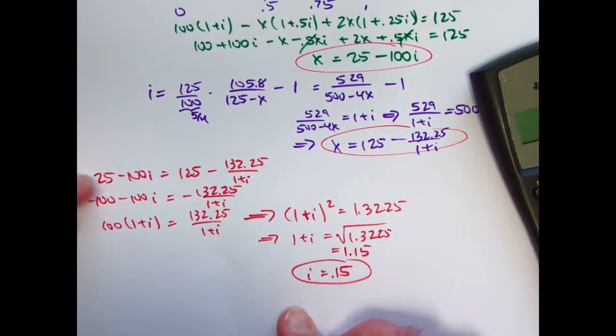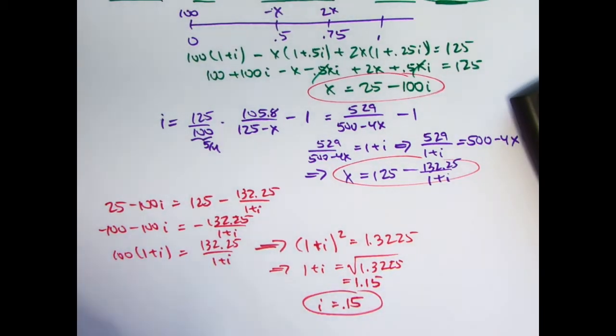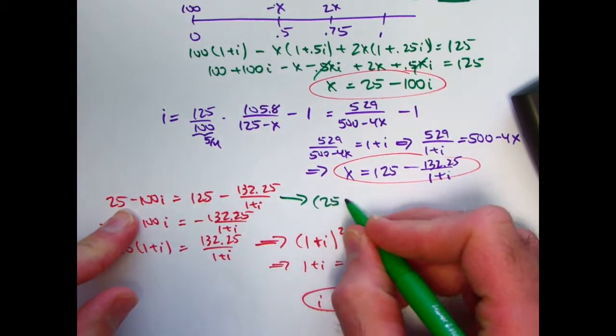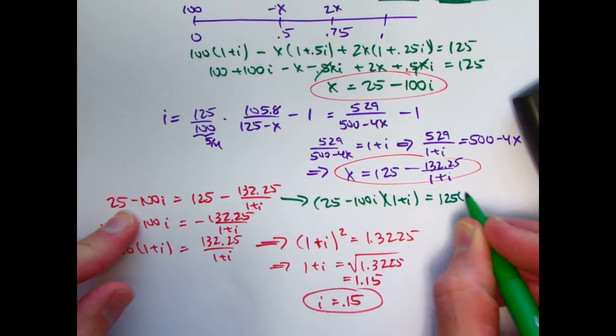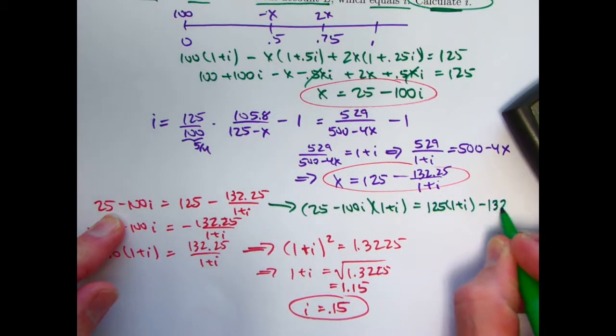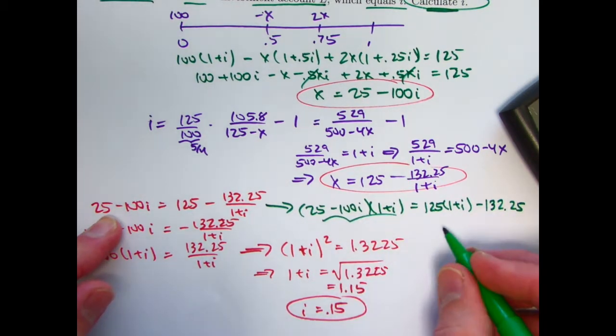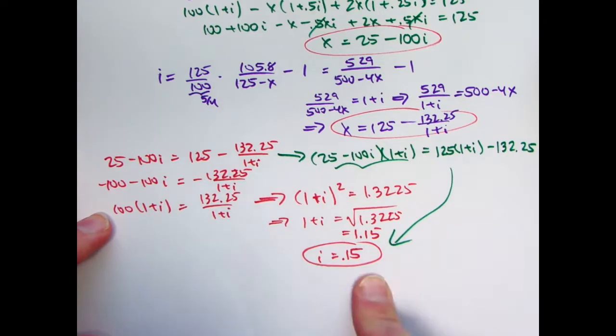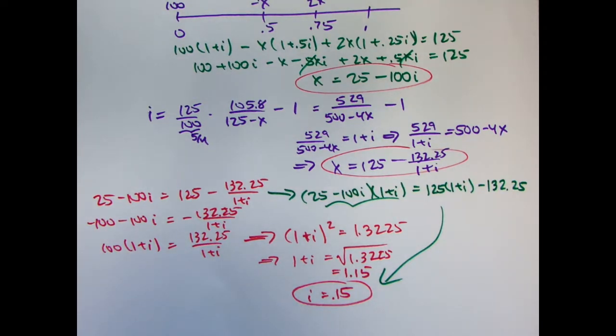If you didn't happen to see that subtracting 125 here and then dividing everything by negative 1 gives you something nice that you can solve quickly without the quadratic formula, you still could use the quadratic formula. You could, for example here, multiply everything by 1 plus i and get 25 minus 100i times 1 plus i equals 125 times 1 plus i. You'd have to expand this out. You'd have to rearrange, use the quadratic formula. You should get the same answer. But this was a nice observation to get to the answer more quickly. But do take the time to confirm that if you simplify this and use the quadratic formula that you do get the same answer.